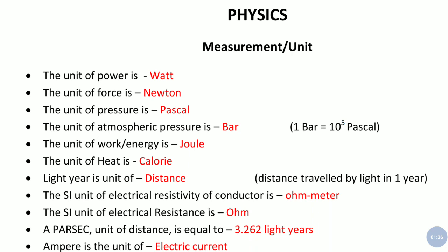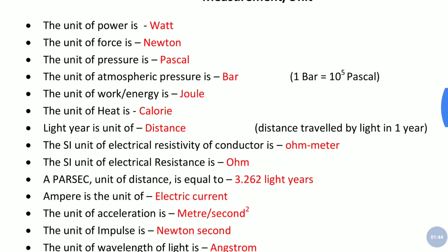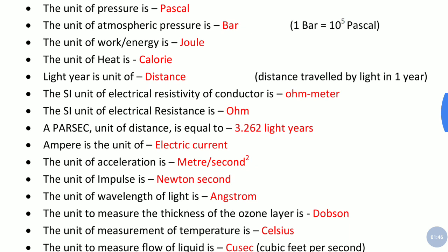Astronomical distances are measured in light year. The SI unit of electrical resistivity of conductor is ohm meter. The SI unit of electrical resistance is ohm. Just try to remember this difference - if it is resistivity it is ohm meter, if it is resistance it is ohm.